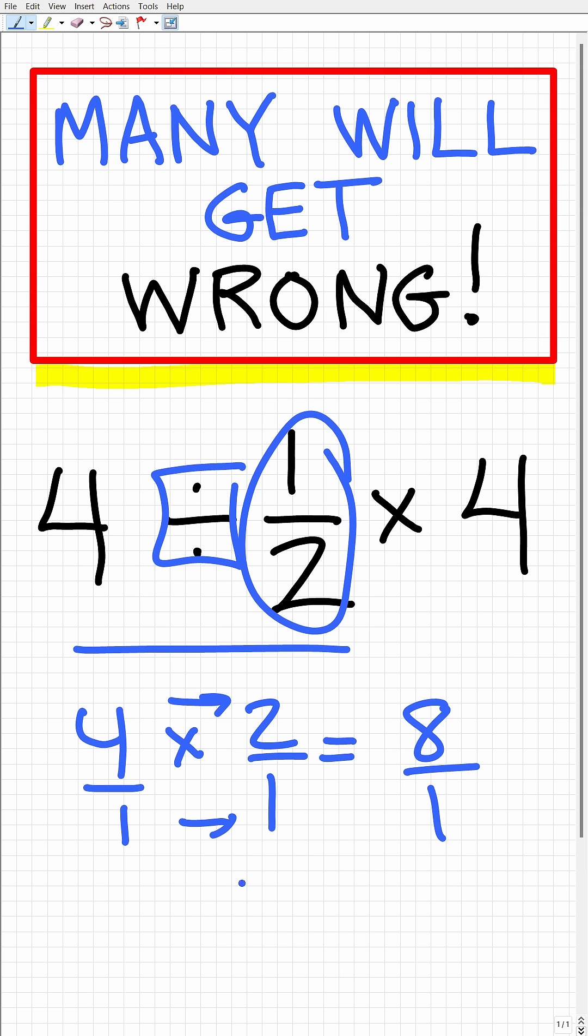Alright, so 4 divided by 1 half is 8. And 8 times 4 is what we have remaining. Of course, is 32, which is the right answer.